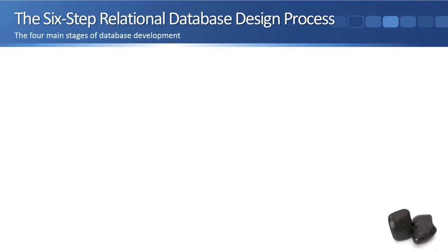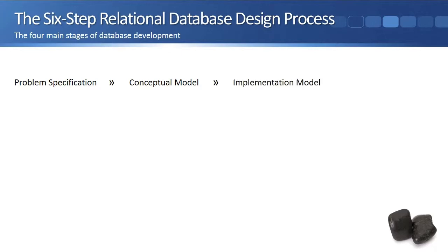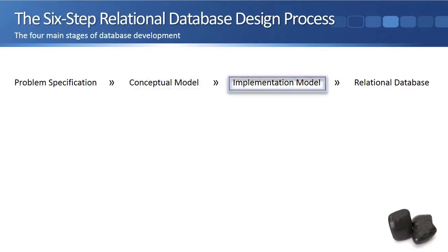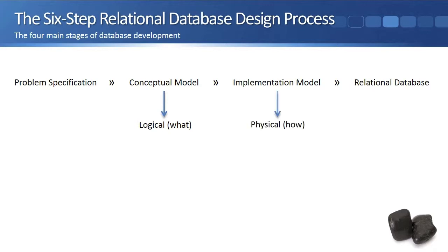There are four main stages of database development: the problem specification, the conceptual model, the implementation model, and the relational database. This means that the database design process takes you through two different models — the conceptual model and the implementation model. Conceptual models are concerned with the logical nature of the data and what is being represented, and implementation models are concerned with the physical nature of the data and with how the data will be represented in the database.